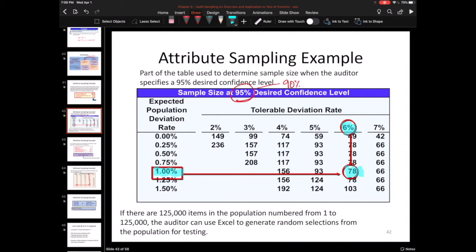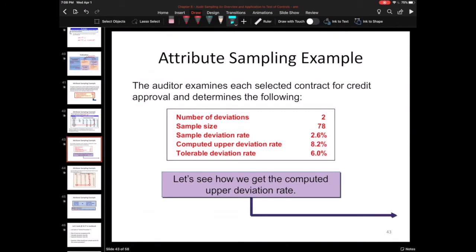And the next thing that you do in these is first you calculate the sample deviation rate. And remember the sample deviation rate is very simple. It is number of deviations over sample size. That is going to get you that 2.6%. Then you have the computed upper deviation rate. So how do you get that?